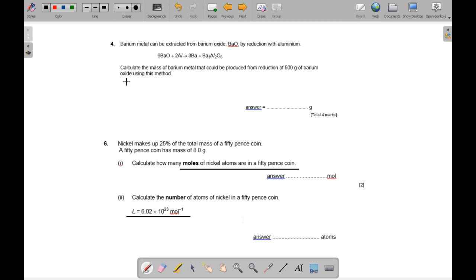Looking at question 4 now. We need to do 500 over 16 plus 137.3, which is the mass of barium, and that gives us 3.2615786. And now dividing that by 2, we need to keep the molar ratios. It's exactly the same. So we get 1.08.